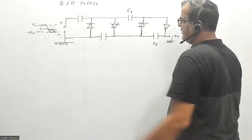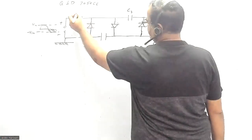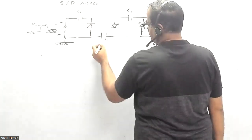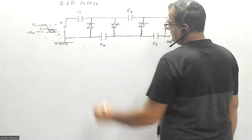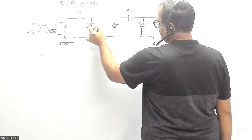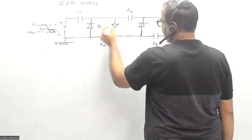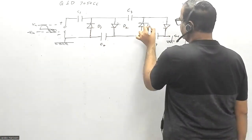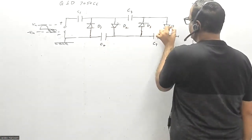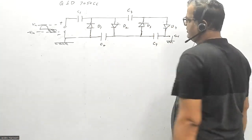Let us label the components. This capacitor is C1, this is C2, this is C3, and C4. This diode is D1, this is D2, D3, and this is D4.